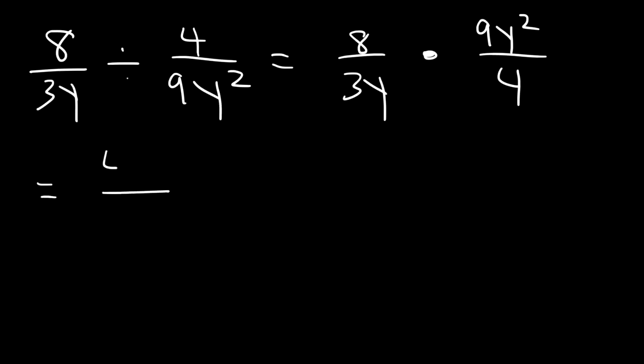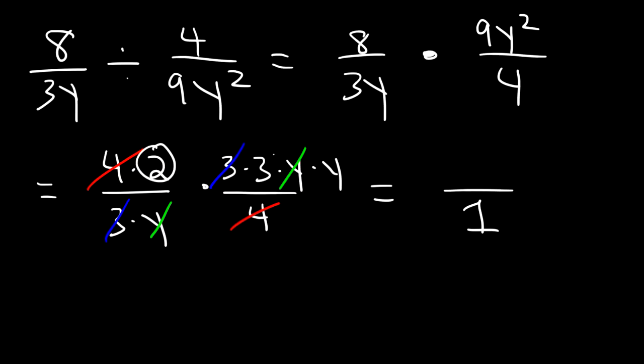8 I'm going to write it as 4 times 2. 9y squared I'm going to write it as 3 times 3 times y times y. Notice that I can cancel a 4. I could cancel a 3. And I can cancel one of the y variables. So I have nothing left over on the bottom. So I'm just going to put a 1. On top I still have a 2, a 3, and a y. 2 times 3 is 6 times y. We have 6y. So that's the final answer. 6y over 1 is the same as 6y.